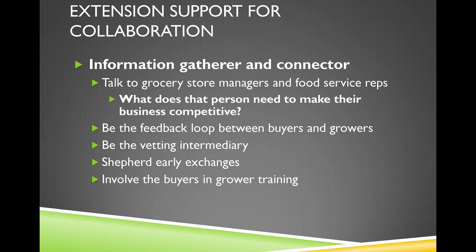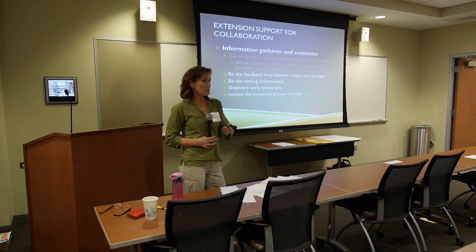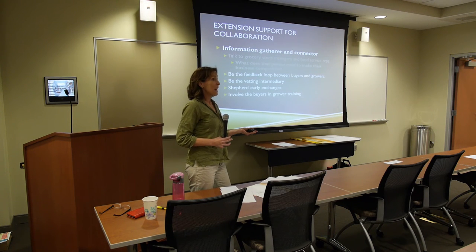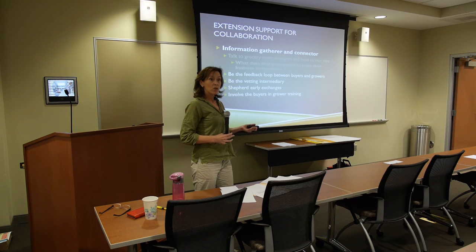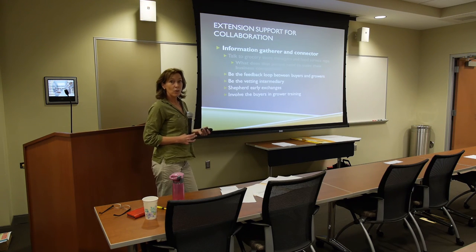Once you've found out what the store manager wants so they can be successful, you can help by being a feedback loop between buyers and growers. A grower won't always have time to go out and meet every produce manager, but you in the course of your daily work — maybe through the Chamber of Commerce or other business groups — can meet everyone along the supply chain and take that information back and forth. You can be the vetting intermediary: if growers could supply pumpkins to ten stores that want local pumpkins, you're going to make sure that the pumpkin grower who says they're ready to supply actually has those pumpkins and has grown them before. That's how you gain great legitimacy and worth in the eyes of the buyer, and they'll come back to you as a valuable source of valid information.